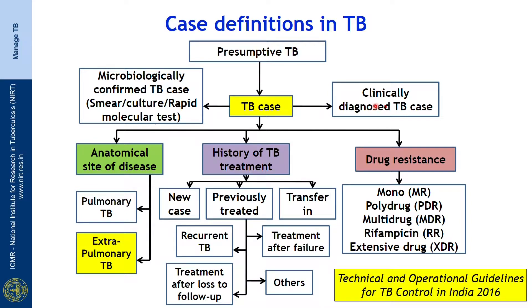Once you know it is a previously treated case, you should know whether it is a recurrence of the TB — what we call a relapse — or it is treatment after loss to follow-up. Most of the cases would have taken treatment for more than one month and then come to you later, defaulting the therapy. Then it is a case of loss to follow-up. Similarly, there might be some patients who are on treatment failure because most TB cases should have good responses within two to three months.